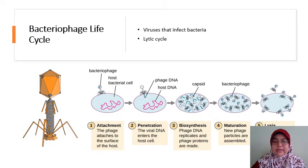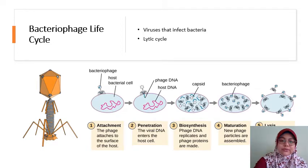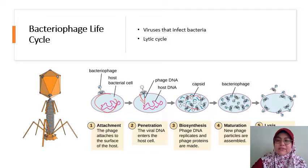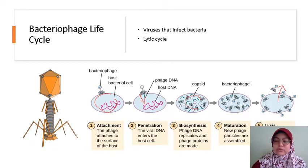Bacteriophage are viruses that infect bacteria. They have a life cycle called a lytic cycle, where the bacteriophage attaches to the bacteria and then inserts its DNA. Using the host materials, it replicates the DNA and produces more viruses, and eventually causes the cell to lyse — basically burst — and releases new viruses.